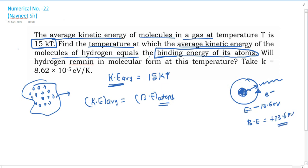Binding energy is equal to 13.6 electron volts. Since this is a single electron atom, the ground state will be the same. Now, here is the temperature — the condition is given by the temperature.